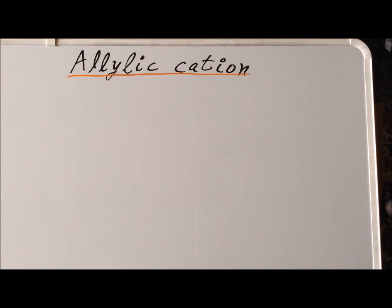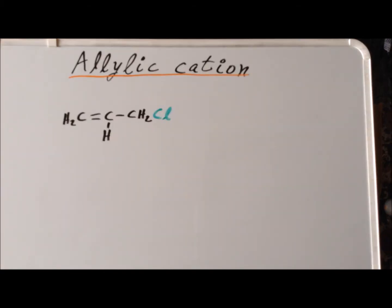In this video, we are going to look at the allylic structure, particularly the allylic cation in SN1 and SN2 reactions. Suppose we start with this compound, 3-chloro-1-propene, in some polar protic solvent.